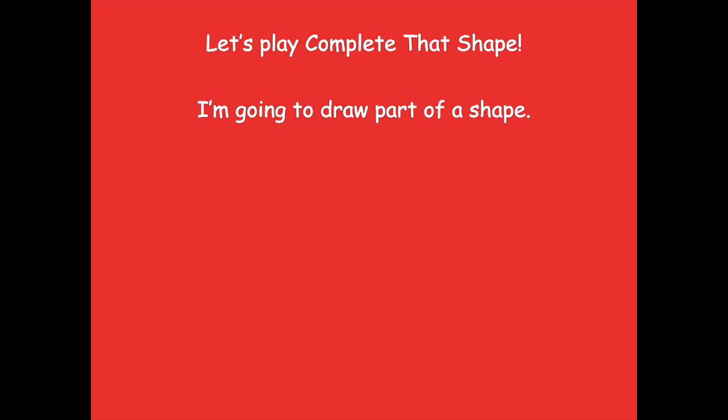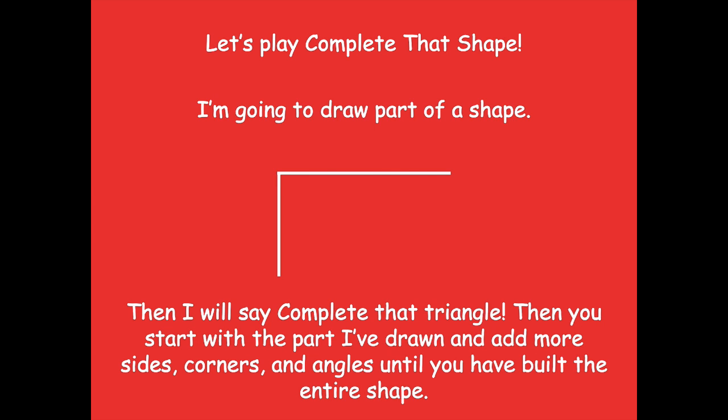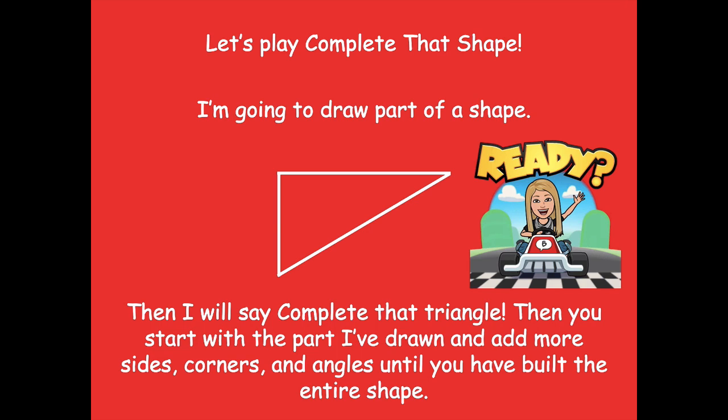Let's play 'Complete That Shape.' Here's how it works: I'll draw part of a shape, then say 'complete that triangle' — or whatever shape. You start with the part I've drawn and add more sides, corners, and angles until you've built the entire shape I named. Remember: triangle is three sides, quadrilateral is four sides, pentagon is five sides, and hexagon is six sides. Are you ready to cruise on through?